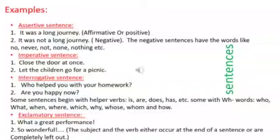Next, interrogative sentence. An interrogative sentence asks a question. It always ends with a question mark. For example, who helped you with your homework? Are you happy now? Some sentences begin with helper verbs like is, are, does, has, etc. Some with wh words: who, what, when, where, which, why, whose, whom, and how.